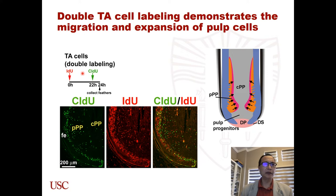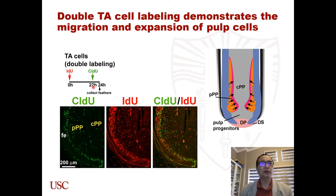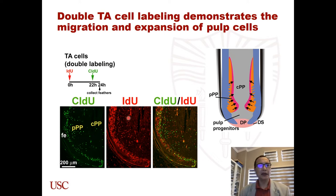But we can clearly find cell proliferation happening in the peripheral pulp. We further used an IdU/CldU double-labeling method. We inject IdU at time zero, then inject CldU at 22 hours and collect feather two hours later. We can clearly find a difference in proliferating cells between the two-hour CldU labeling and the 24-hour IdU labeling, suggesting that cell migration happened in the pulp from the peripheral pulp to the central pulp.